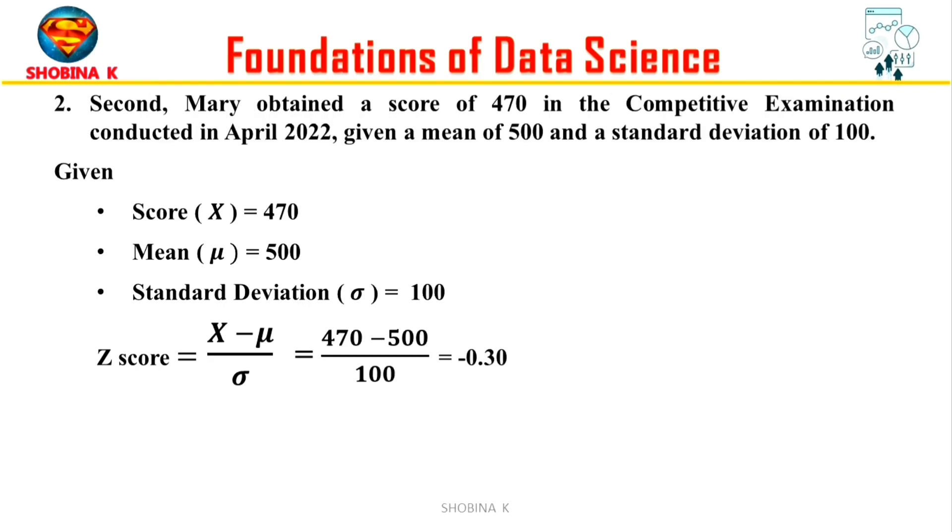Now let's consider Mary's score in the competitive examination. Her score is 470 and the mean for the exam is 500 with a standard deviation of 100. Now applying the values to the formula, which simplifies to minus 0.30, which means Mary's competitive exam score is 0.30 standard deviations below the mean. So Mary's z-score for her competitive exam score of 470 is minus 0.30.